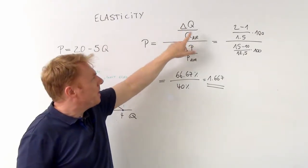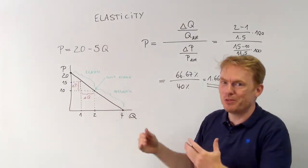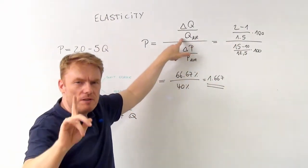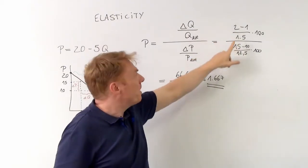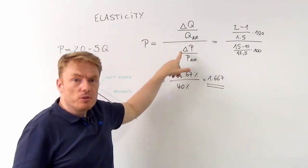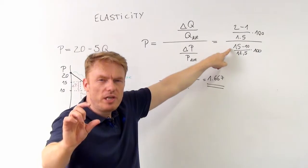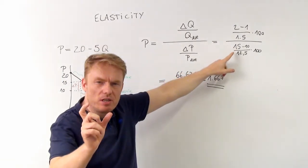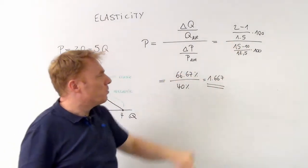The total change of the quantity demanded is 2 minus 1, divided by — very importantly — the average quantity. The average quantity between 1 and 2 equals 1.5. The same holds true for the price: it goes down from 15 to 10, which means the total change in price equals 5, divided by the average price. The average price between 15 and 10 dollars is 12.5.